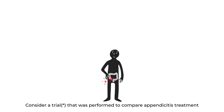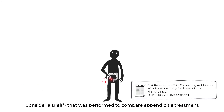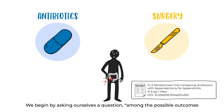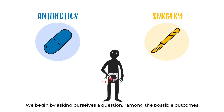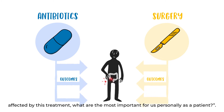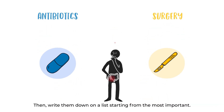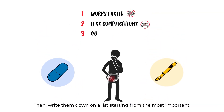Consider a trial that was performed to compare appendicitis treatment by antibiotics rather than the usual surgery. We begin by asking ourselves a question: among the possible outcomes affected by this treatment, what are the most important for us personally as a patient? Then we write them down on a list starting from the most important.